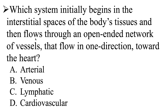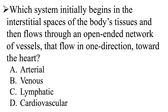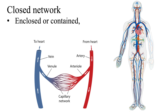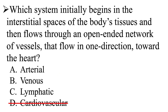This system then flows through an open-ended network — another key word. In our bodies, we have both closed and open networks of vessels. A closed network means fluid is enclosed or contained within the vessels. An example is our cardiovascular system, which is a closed circulatory system where blood stays within the blood vessels, pumped by the heart through arteries, arterioles, capillary beds, venules, veins, and back to the heart. So we can eliminate the cardiovascular system because we are looking for an open-ended network.